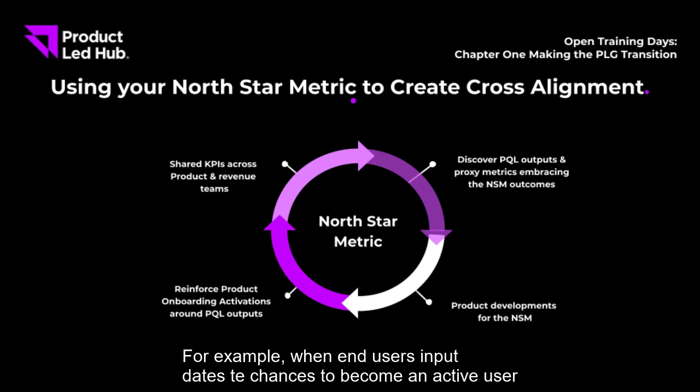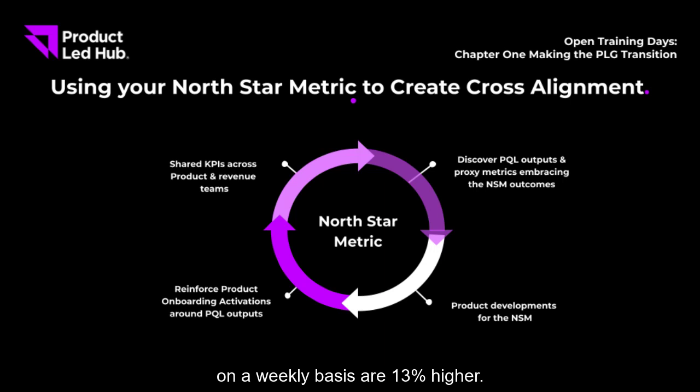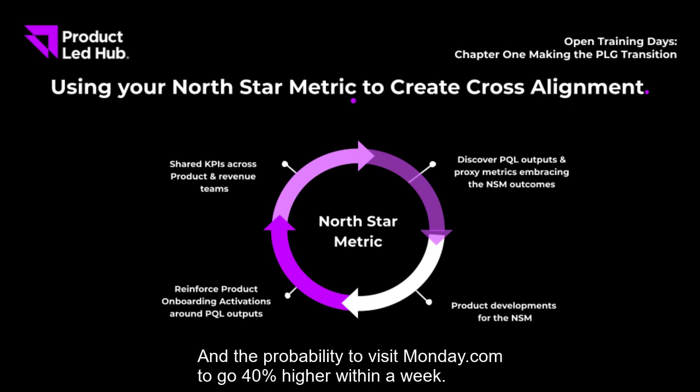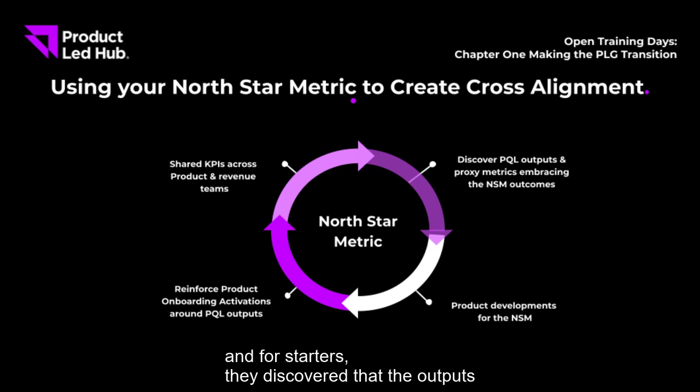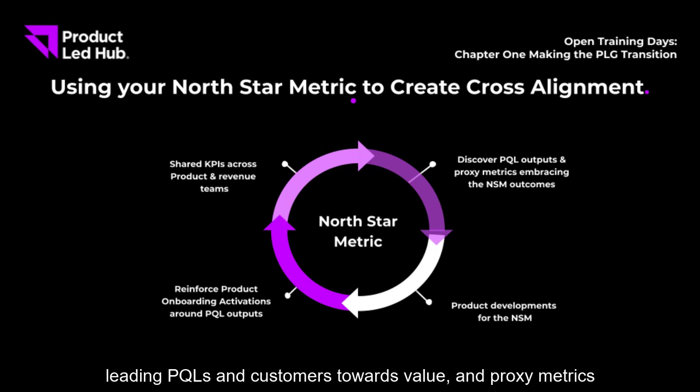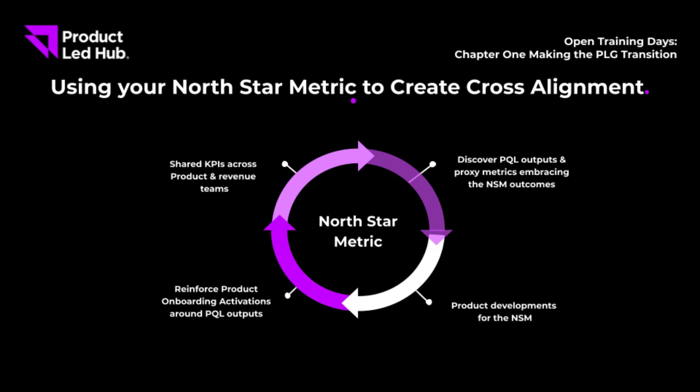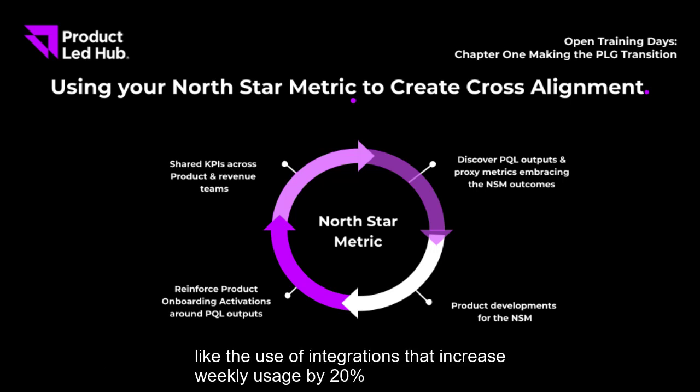The product team saw a clear connection between usage of dates in the platform and becoming a weekly active user. When Monday.com users input dates, the chances of becoming a weekly active user are 13 percent higher, and the probability of visiting Monday.com within a week is 40 percent higher. So the product team doubled down on that, discovering proxy metrics like the use of integrations, which increase weekly usage by 20 percent.